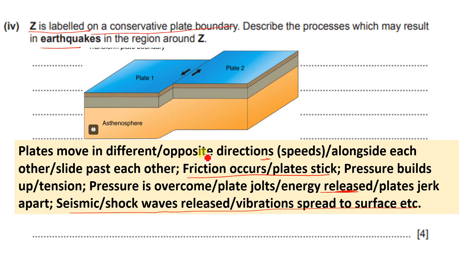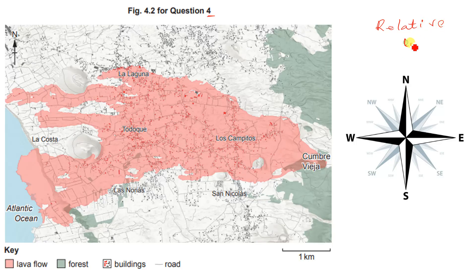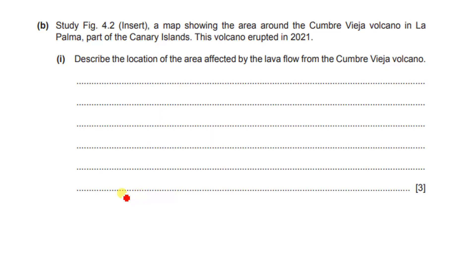We've just described the two major ways in which volcanoes occur and the ways in which earthquakes occur. Now here we have part B, figure 4.2 for question four. I've included a cardinal point here to help explain how to describe relative location if they ask you to describe the distribution of anything. The first thing is to use the key to interpret the map.